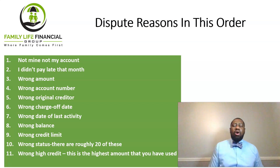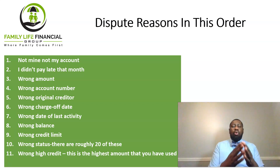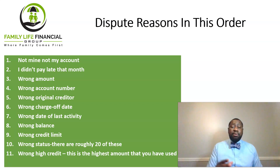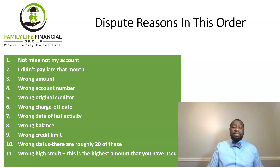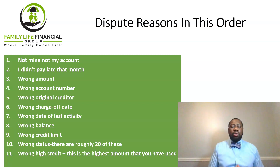There's also 'wrong high credit' — high credit is the highest amount you have ever used. More than likely you're going to be able to find some kind of error on your credit report that you can dispute. Use these dispute reasons in the order listed on this slide.